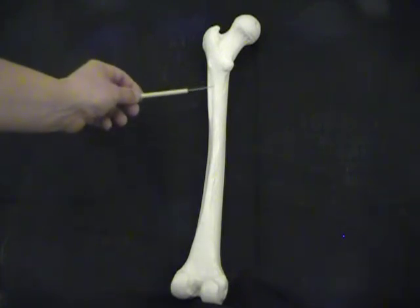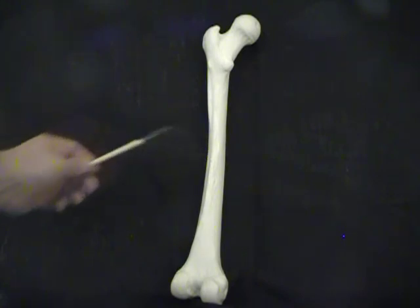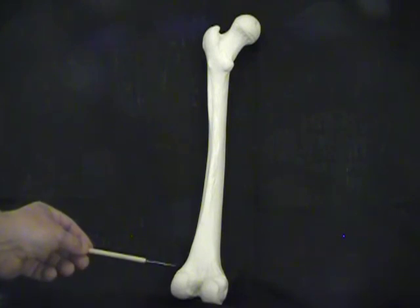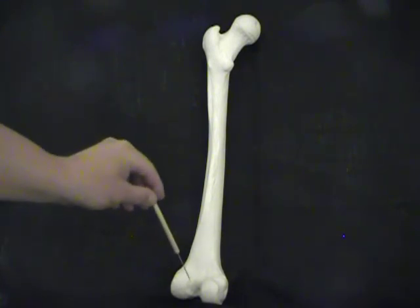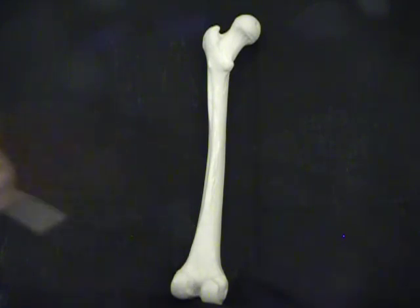Then there's a long line right in the center of the bone here. This is called the linea aspera. Then finally, we're going to see our lateral and medial condyles, and we're going to see the intercondylar notch in between the two condyles.